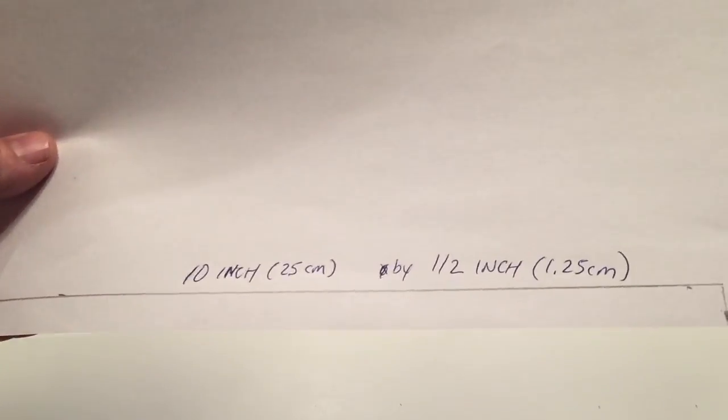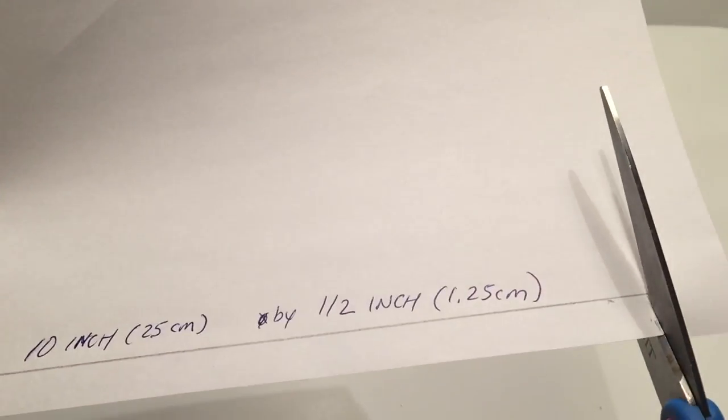To set up this experiment, we need a 10 inch by half inch piece of paper, 25 centimeters by one and a half centimeters. We're going to cut that out, and once we get that cut out, then we are going to fold it in half.